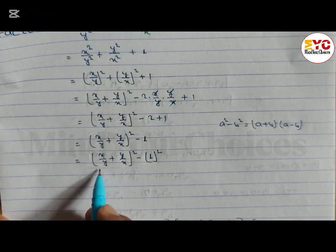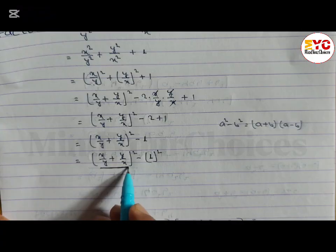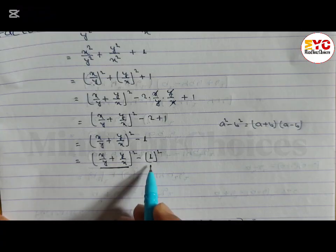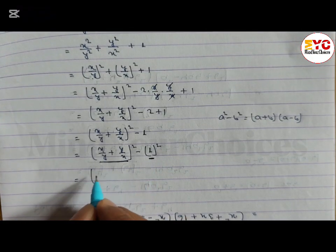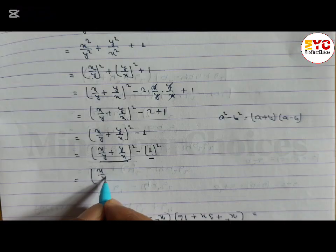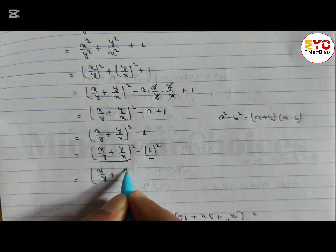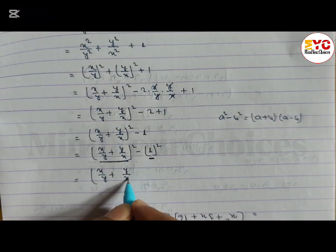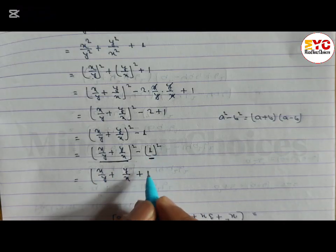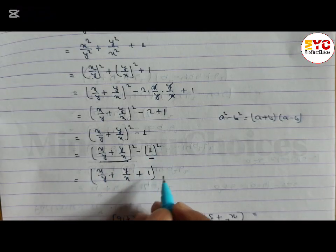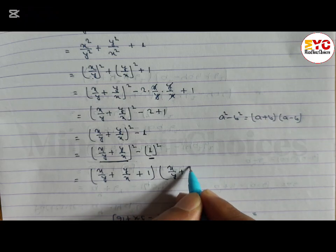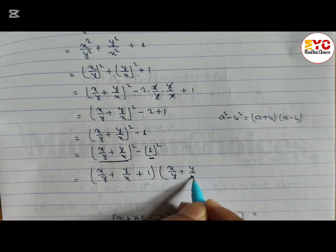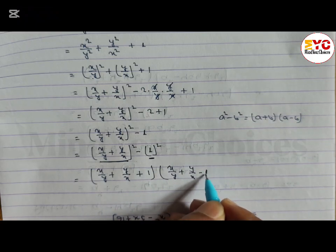The formula for a squared minus b squared is a plus b times a minus b. Here a is x by y plus y by x, and b is 1. So we write x by y plus y by x plus 1, times x by y plus y by x minus 1.